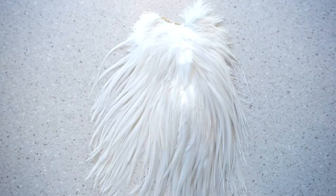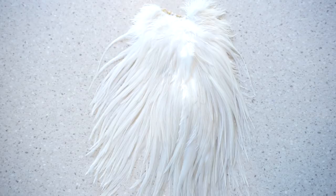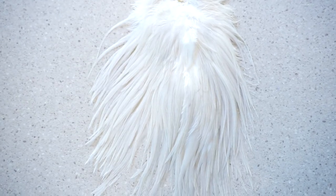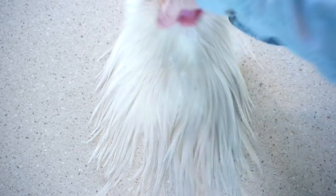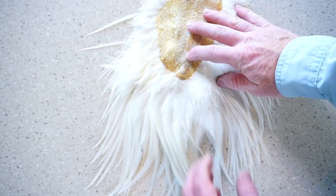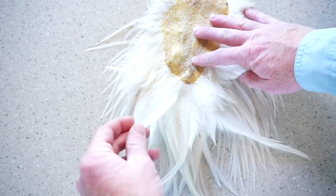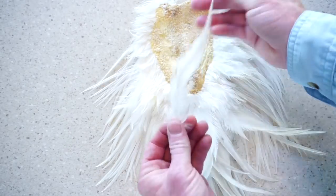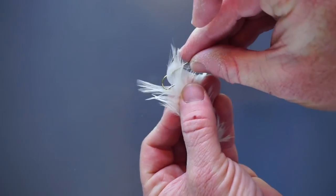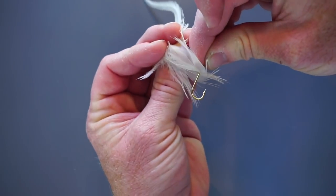And now we need a feather. A simple and inexpensive rooster saddle like this will work just fine. I'm actually looking for schlappen, which is located on the back side of the saddle. As you can see these feathers have more webby and long fibers, which will work great for this size bugger. Also you can see that this schlappen is about double the size of the hook gap, which is what I'm looking for.